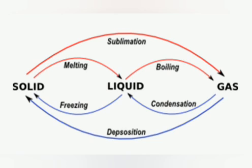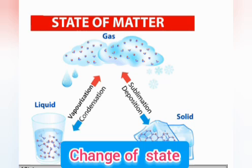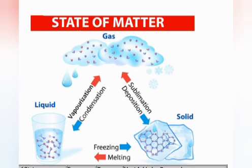Effects of heat — third point is change in state. We know that matter exists in three states: solid, liquid, and gas. The most common substance that can exist in all three forms is water. The three states are ice (solid state), water (liquid state), and water vapor or steam (gas state). The change in the state of a substance is generally caused by the rise or fall in temperature of the substance.